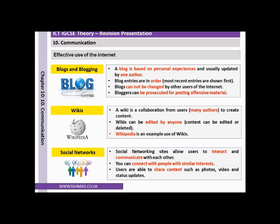The disadvantage of Wikipedia is that because many authors are able to edit the content, the content may not be trustworthy. Social networking sites allow users to interact and communicate with each other, connect with people with similar interests, and share content such as photos, videos and status updates. Businesses can also use social networks to reach out to their potential customer base and share information about upcoming sales.